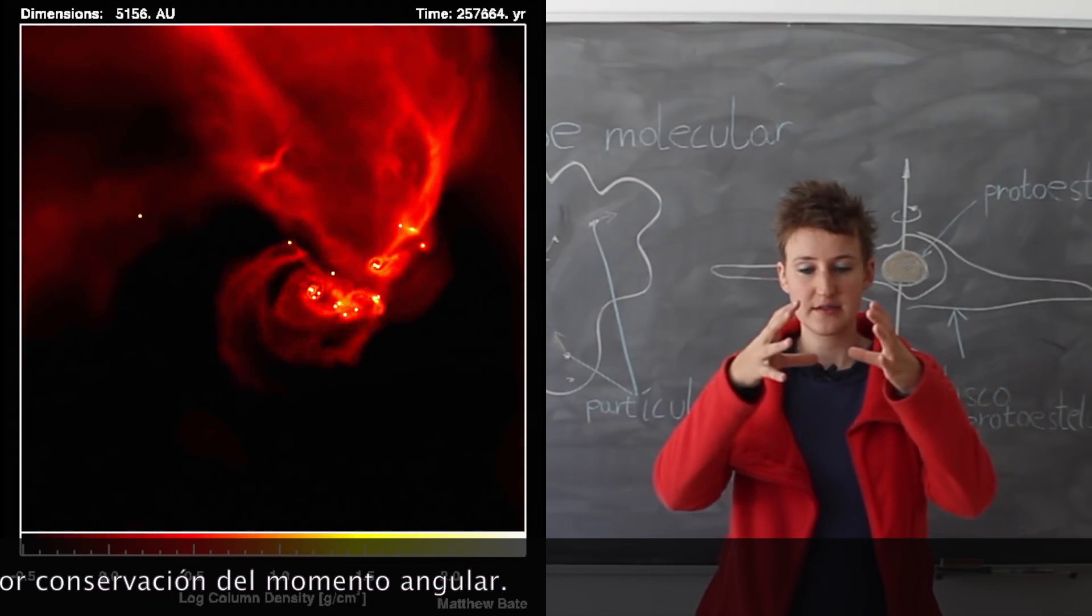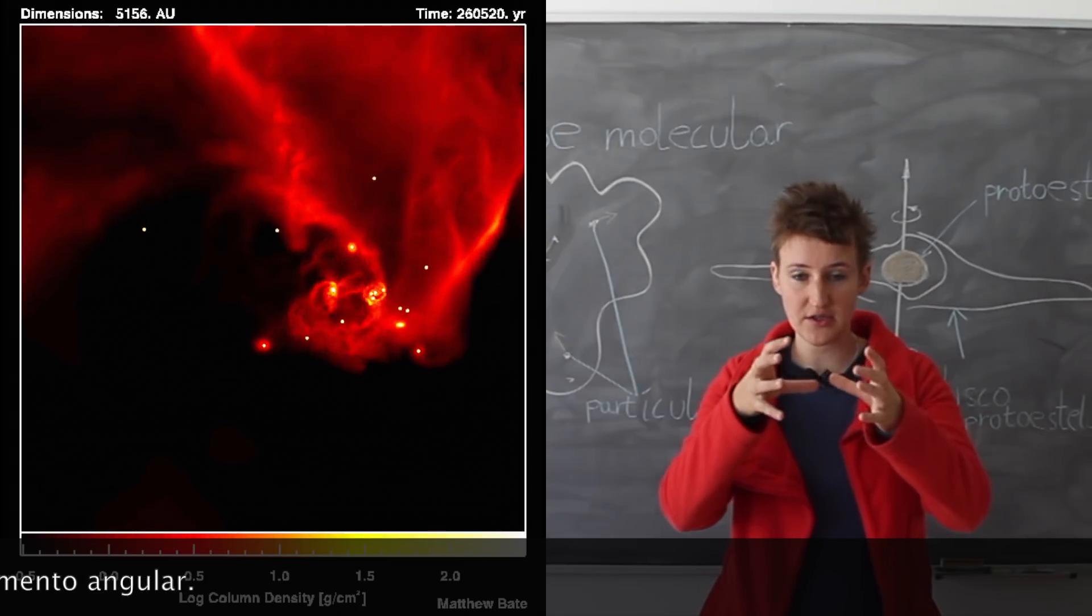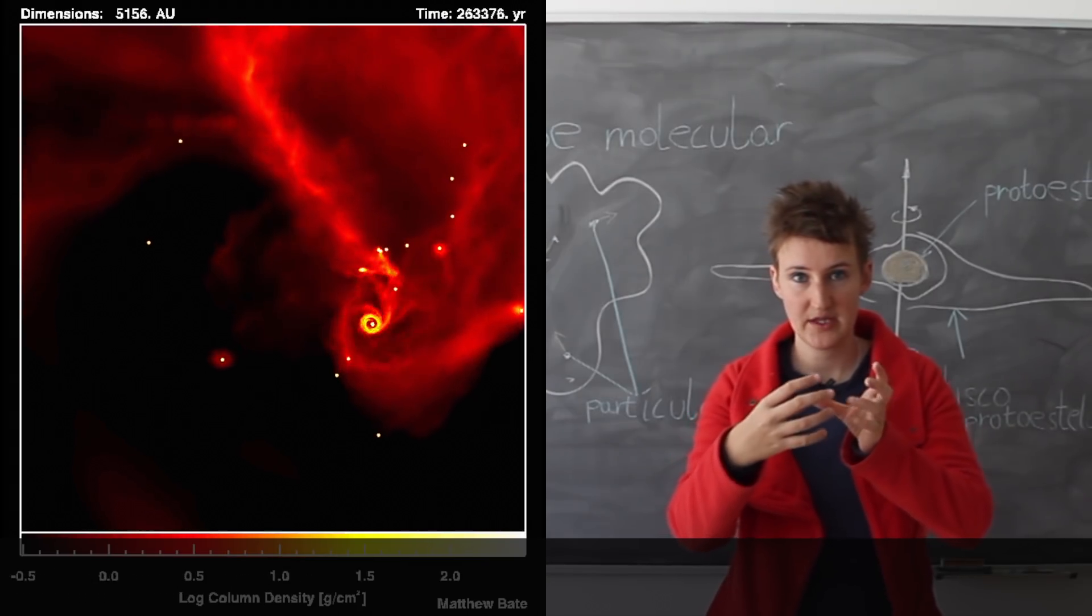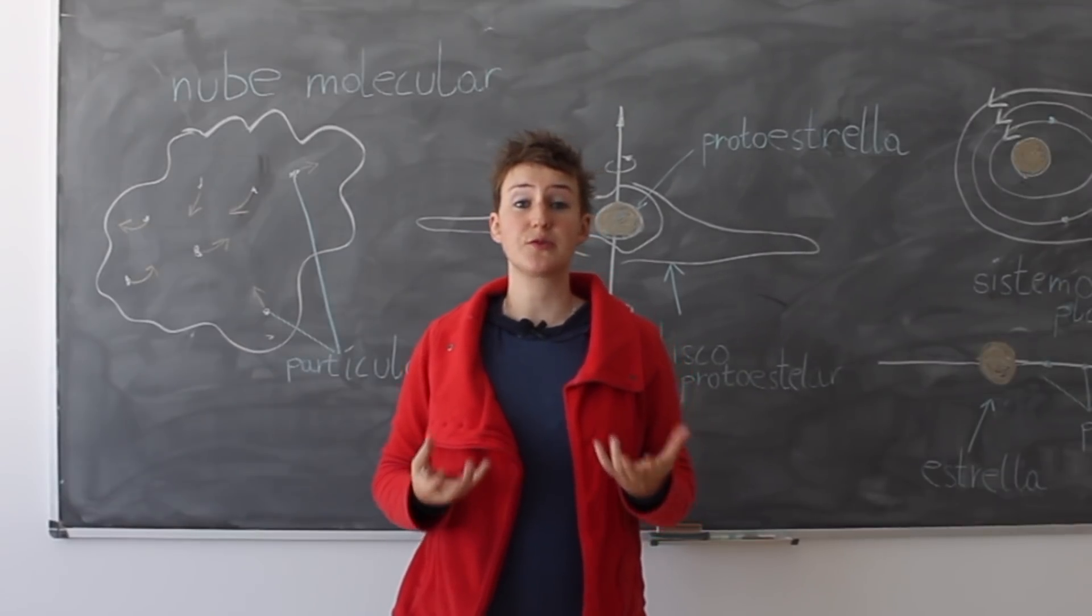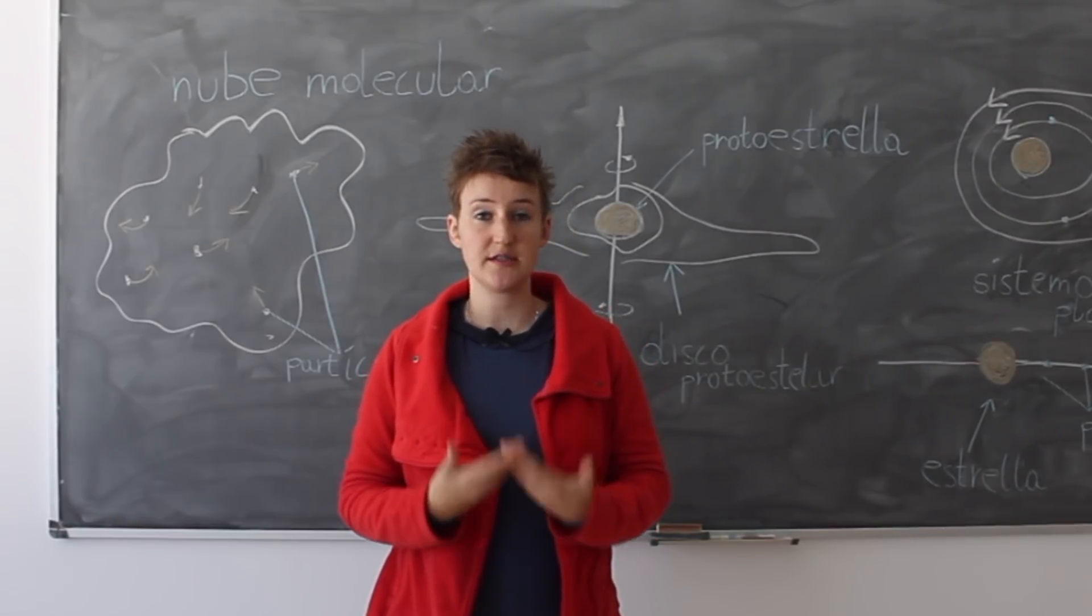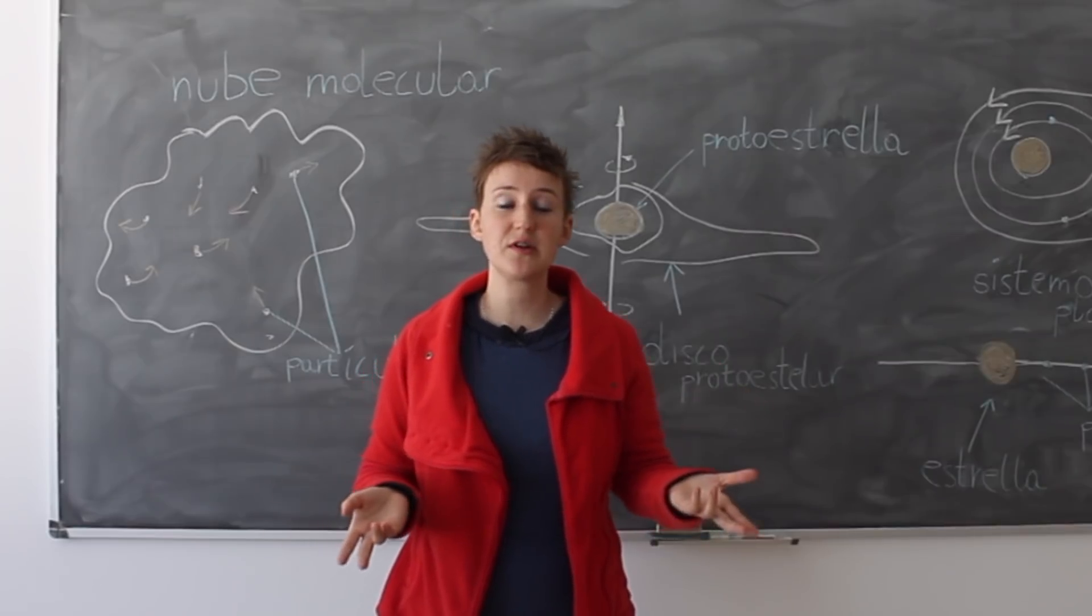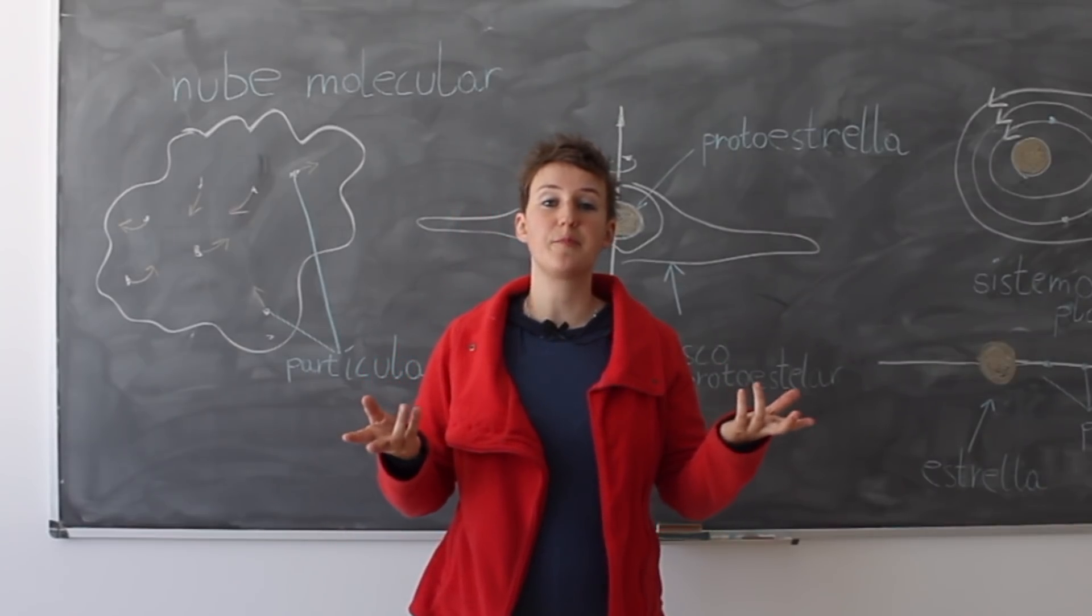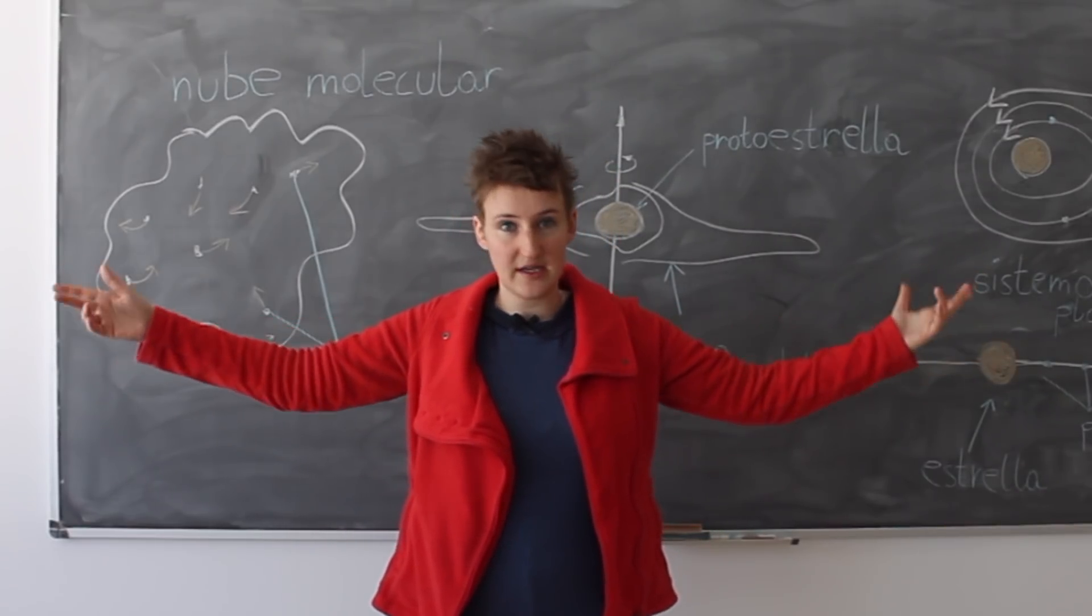So this tiny little region will start to rotate slowly. And what we know about rotation and angular momentum can be shown in an easy example. For example, let's imagine a ballet dancer or a figure skater rotating.